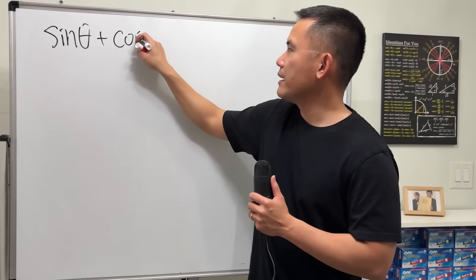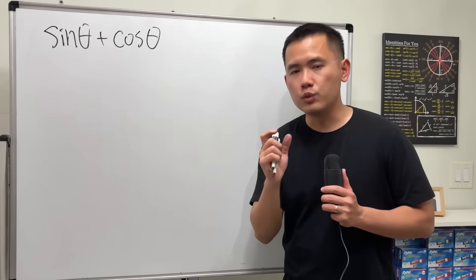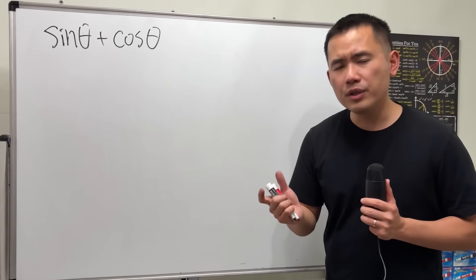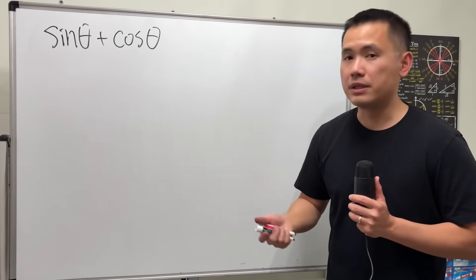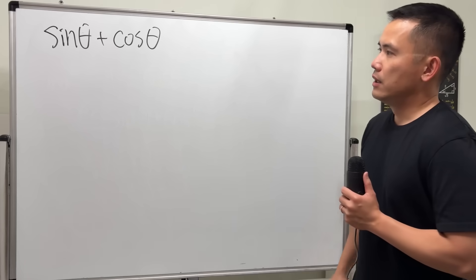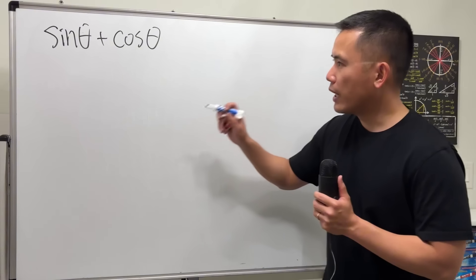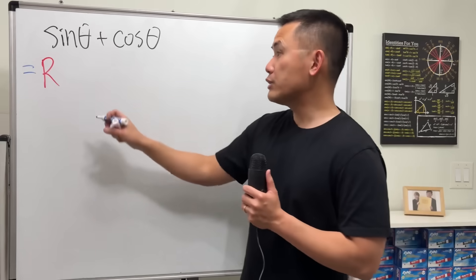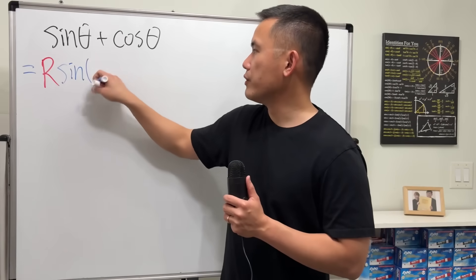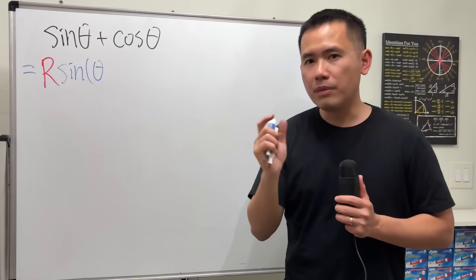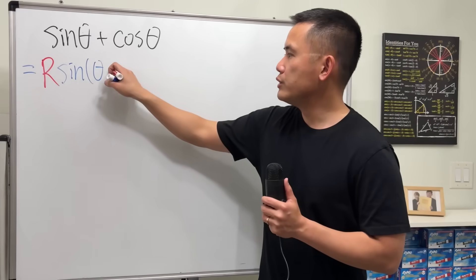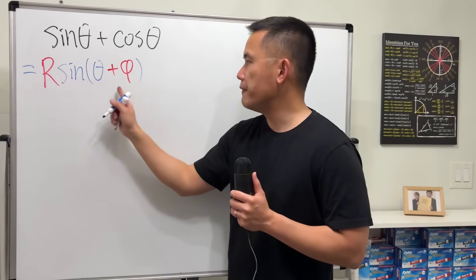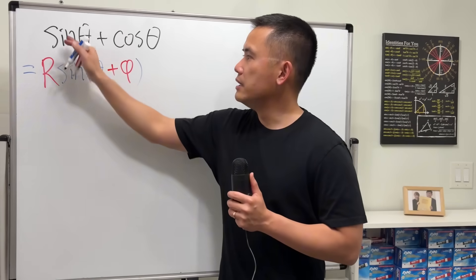When we have sine theta plus cosine theta, in fact we can write this into just one single sine function. But the amplitude is going to change. What I mean by that is the following: we can actually write this as some number, usually we put it down as capital R, times sine of—we still have to have the angle theta, but we have to modify the angle a little bit. We are just going to add another angle, that's a phi.